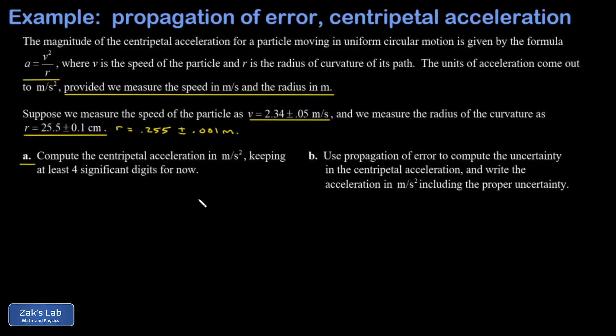I'm told to keep four significant digits, so a is v squared over r. That's 2.34 squared over 0.255, which gives me 21.47 meters per second squared.